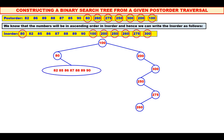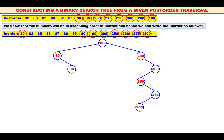Now, among 82, 85, 86, 87, 88, 89, 90, which is the root? See the post-order — 90 is the root. Make 90 as the root and mark it in the inorder. All the elements are to the left of 90. Therefore, take them all to the left sub-tree.